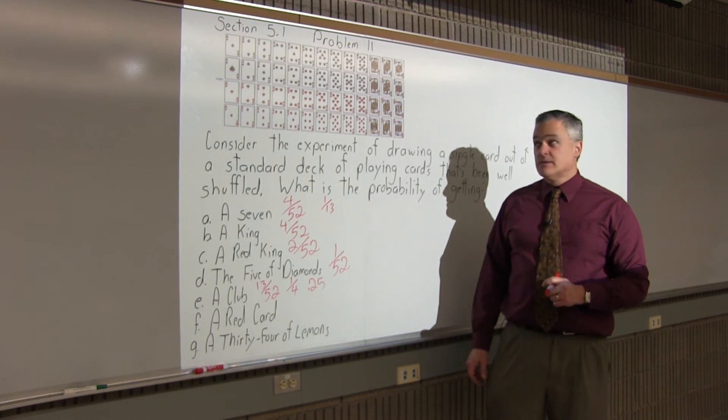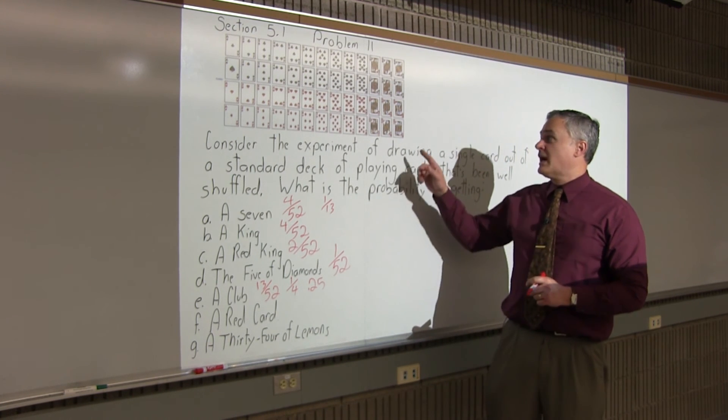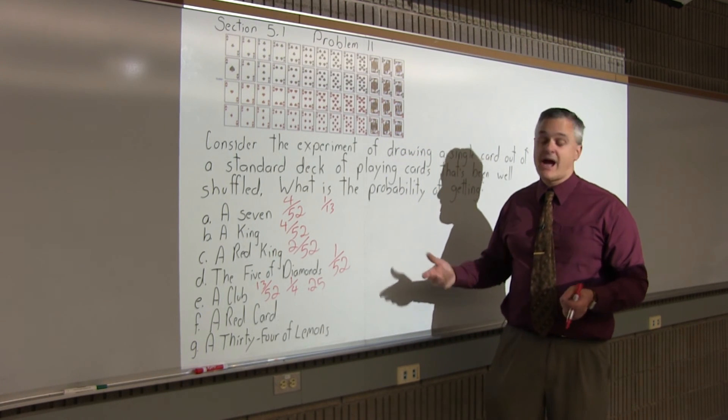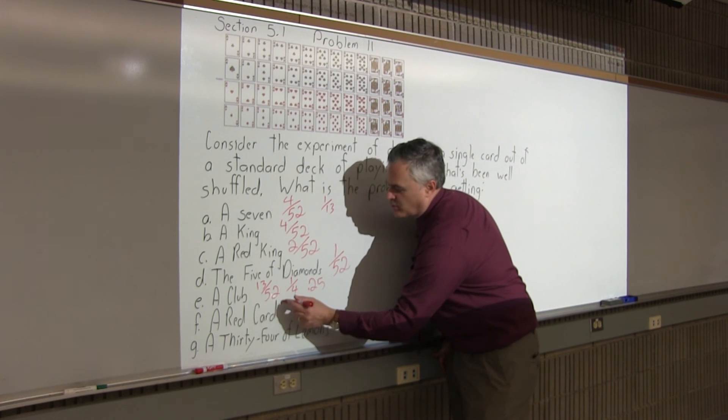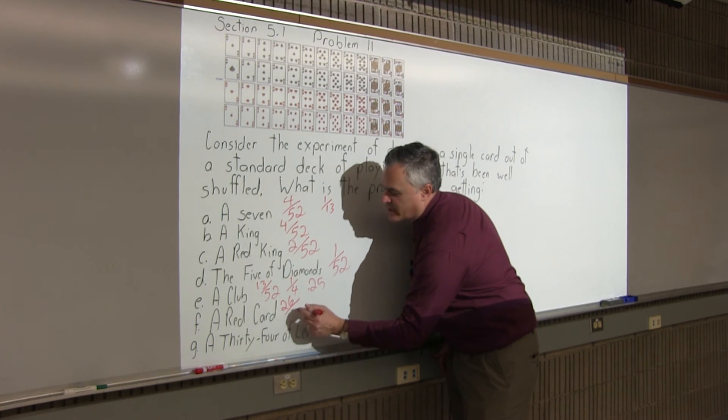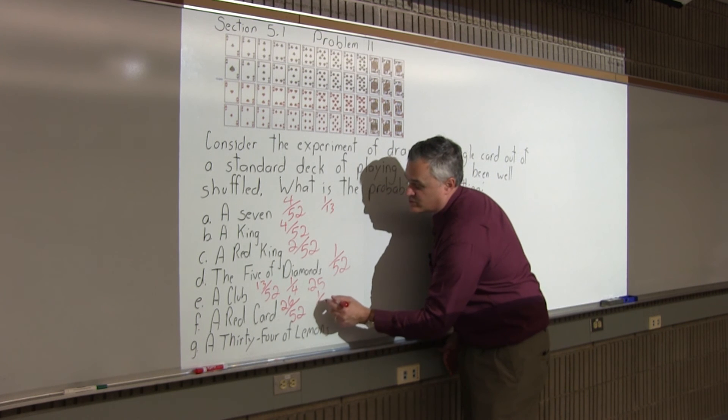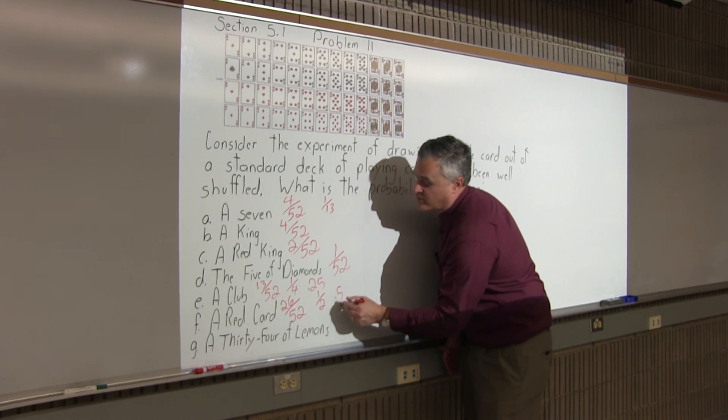A red card. Well, half the cards are red and half are black. So, the probability of getting a red card is a half. I mean, you could do it a little bit more formally. You could say there are 26 red cards out of 52 altogether. And you could see that that would reduce to a half, or if you like, 0.5 or 50%.